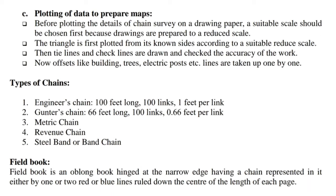Plotting of data to prepare maps: Before plotting the details of chain survey on a drawing paper, a suitable scale should be chosen first because drawings are prepared to reduced scale. The triangle is first plotted from its known sides according to a suitable reduced scale. Then tie lines and check lines are drawn to check the accuracy of the work. Offsets for objects like buildings, trees, electric posts, etc. are then plotted one by one.